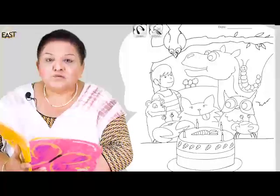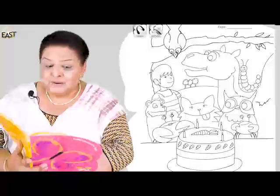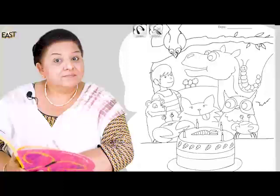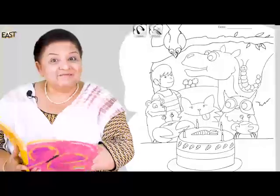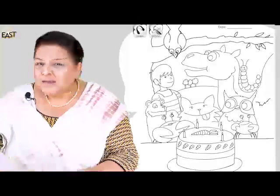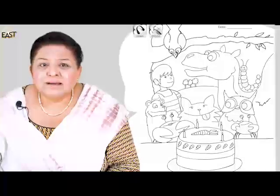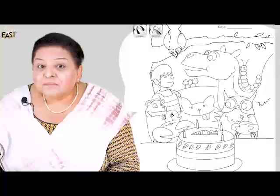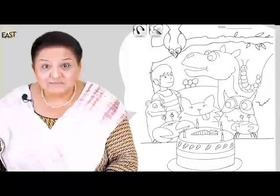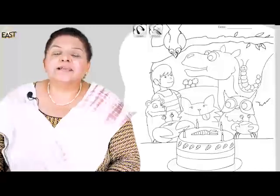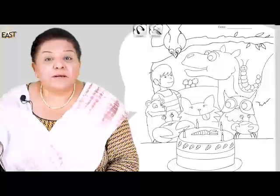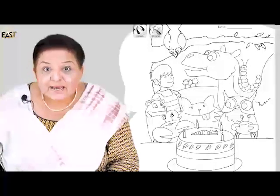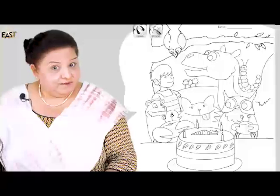Good. Yeh kawa, aapko kya lagta hai? Crow caterpillar se baatein kar raha hai ya camel se? Good, camel se baatein kar raha hai. Yeh kya keh raha hoga camel se? Aapko kya lag raha hai? Aisha keh rahi hai ke crow camel se pooch raha hai yeh kiska birthday hai, yeh kiska cake hai, main bhi kha sakta hun? Very good.